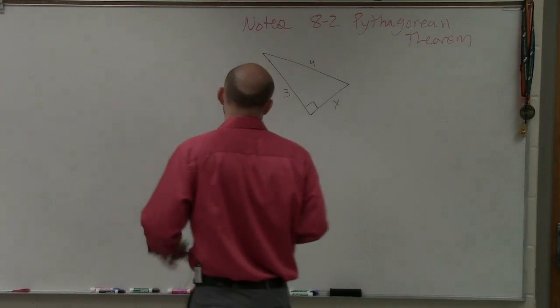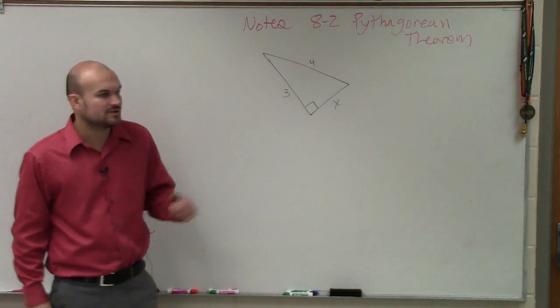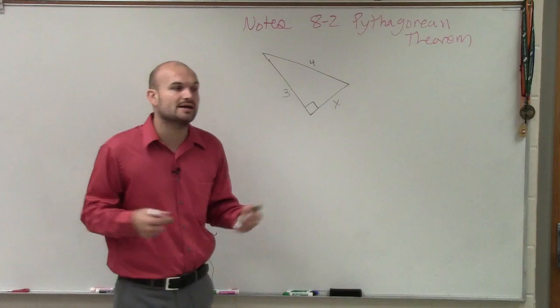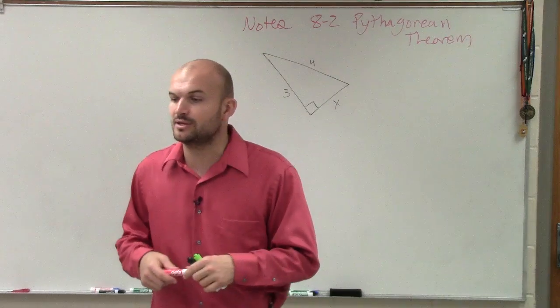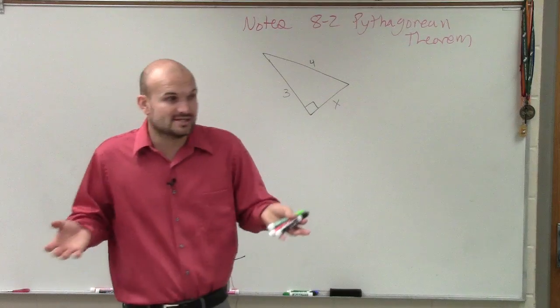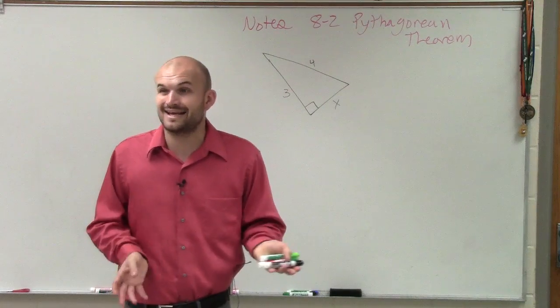What you guys have is 3, 4, and x. What you're going to be doing in this example is we now need to apply our Pythagorean theorem. When you're doing this problem, first we need to determine what is our a, b, and c. What are our legs and our hypotenuse?